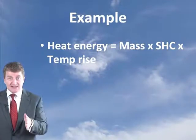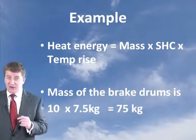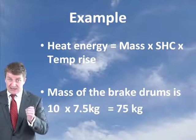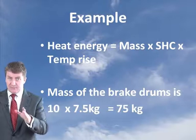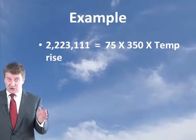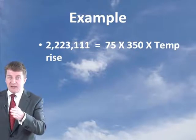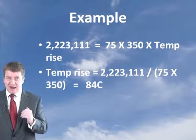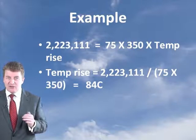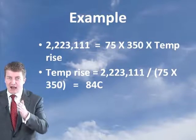All we need to do now is convert that kinetic energy into heat energy and transfer it into the brakes. Heat energy equals mass times specific heat capacity times the temperature rise. The mass of the brake drums is 10 wheels times 7.5 kilograms, which is 75 kilograms. Putting all the known values in: 2,223,111 equals 75 times 350 times the temperature rise. Transposing this, the temperature rise equals 2,223,111 divided by 75 times 350, which gives an 84 degree C rise.